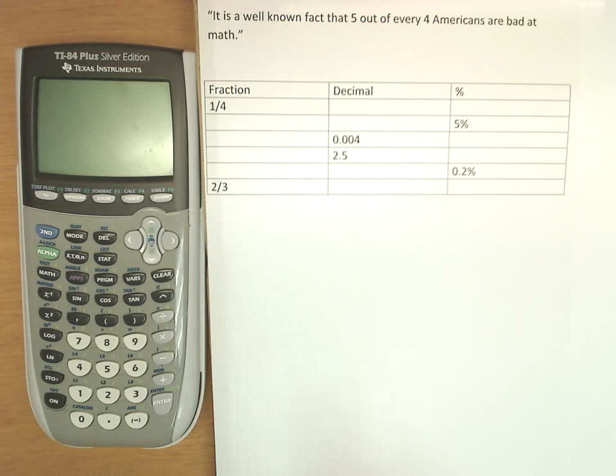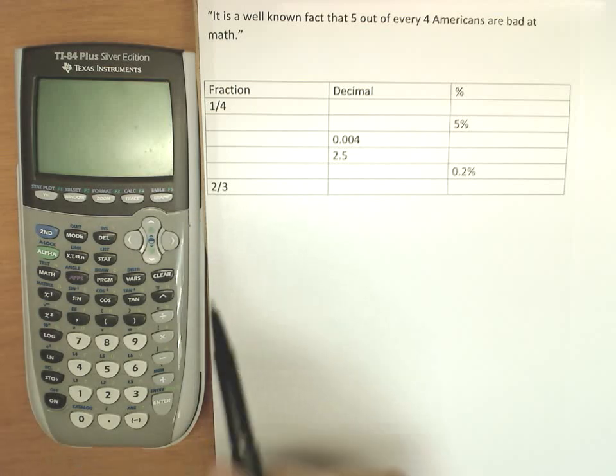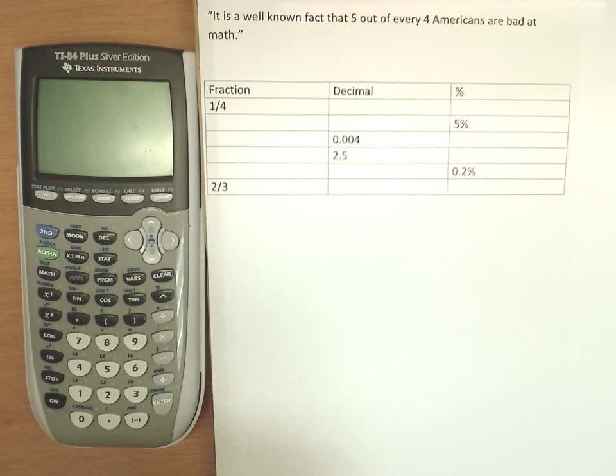Okay, I'm assuming you've come back after pausing the video, and now we're going to go over these. So first off, fractions. We'll turn fractions into decimals. This is just basically division, so I divide 1 by 4, and I get 0.25.